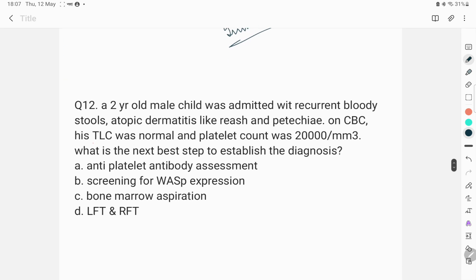Next question was, a 2-year-old male child was admitted with recurrent bloody stools, atopic dermatitis like rash, and thrombocytopenia on CBC. The TLC was normal and platelet count was 20,000. What is the next step for the diagnosis? Here, it is a male child with recurrent bloody stools, recurrent infections, atopic dermatitis like rash that is eczema like condition and thrombocytopenia. So, you can see a triad forming here of recurrent infection, eczema and thrombocytopenia. This is the triad of Wiskott-Aldrich syndrome.